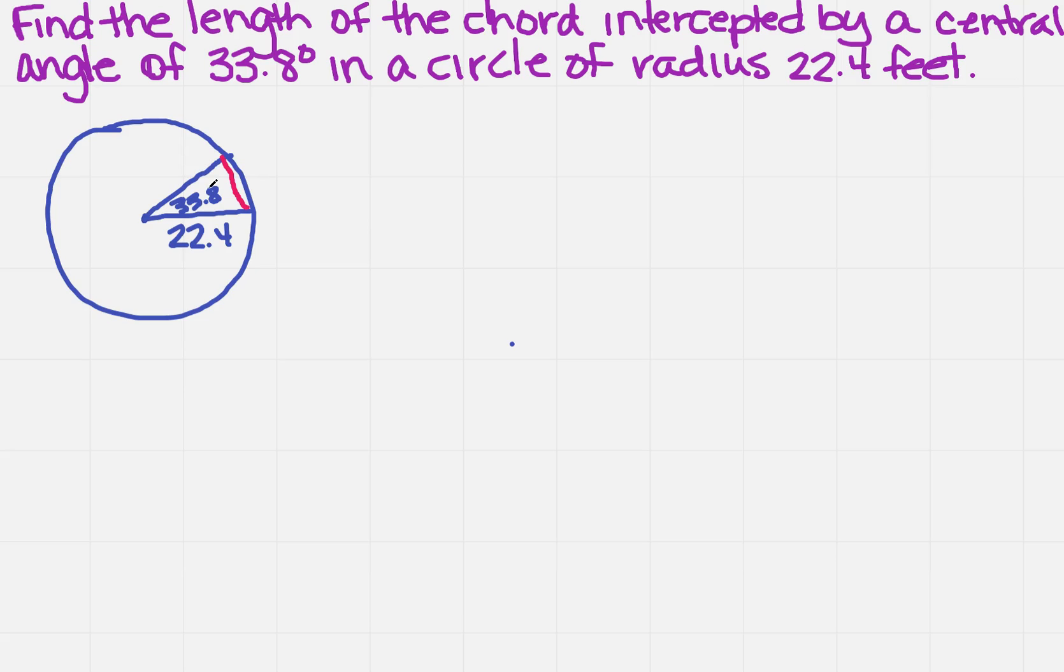Well, it just so happens that there is a formula to find the length of a chord. Make sure you have that handy or you've already memorized that. And that says that a equals r times the square root of 2 minus 2 cosine alpha.